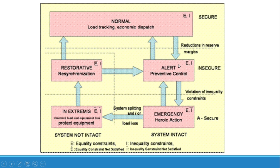If the system is in the alert state — where power generated equals power demand — any outage or disturbance can push it into the emergency state. In the emergency state, equality constraints are satisfied but inequality constraints are not, giving conditions of under-voltage, over-voltage, under-frequency, or over-frequency. The operator can perform corrective actions to bring the system back to the alert state and then to the normal state; however, if the system remains in emergency, it will transition to the in-extremis state.